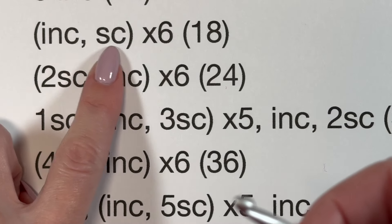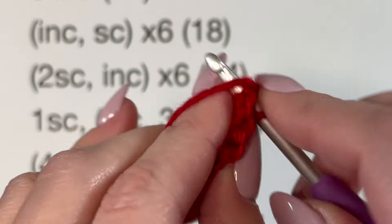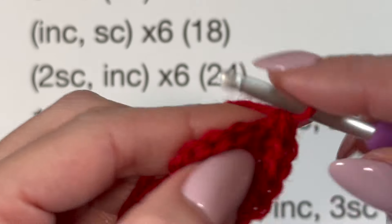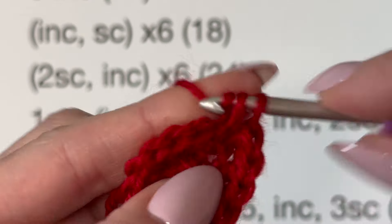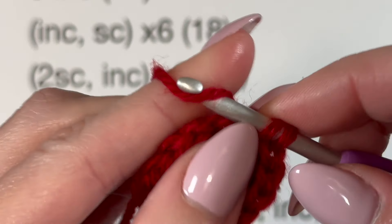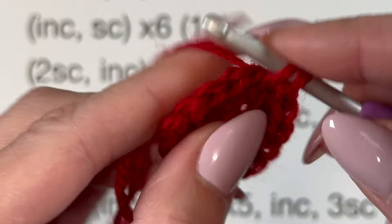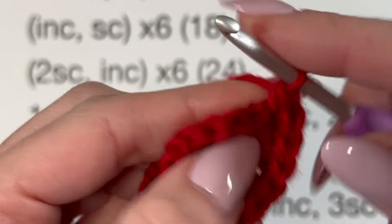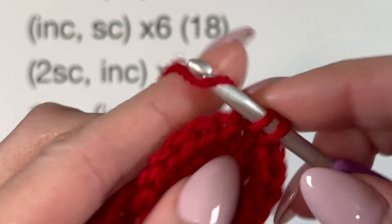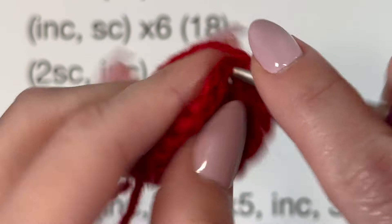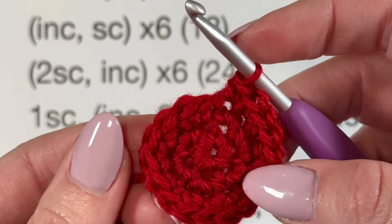Now I'm going to do an increase and a single crochet six times. So I say: '1 A, 1 B, 1' — then '2 A, 2 B, 2' — then '3 A, 3 B, 3' — '4 A, 4 B, 4' — '5 A, 5 B, 5' — '6 A, 6 B, 6.' And you can see I went all the way around and I have the correct number of stitches.